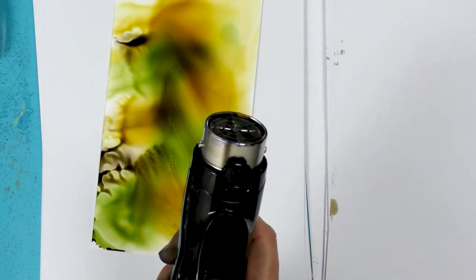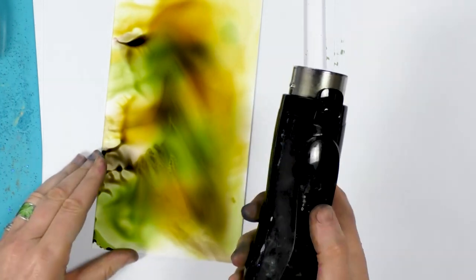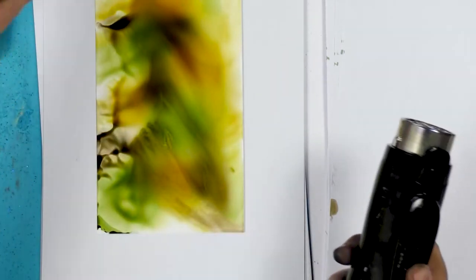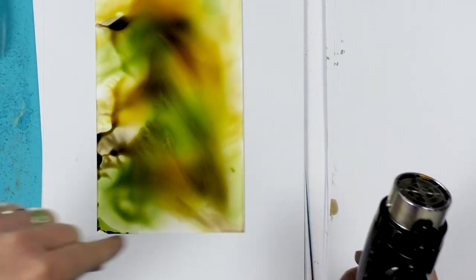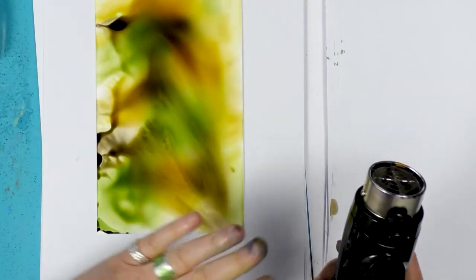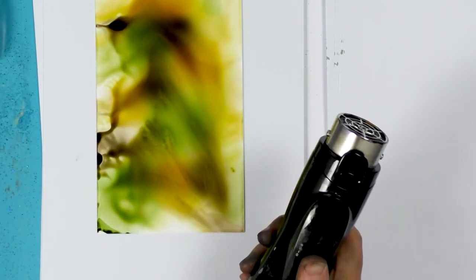So I'm going to use the air dryer now and I'm just going to blow around the edge, containing the color and just moving, chasing it around to create this lovely sort of smoky effect.